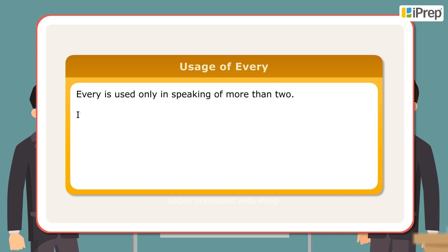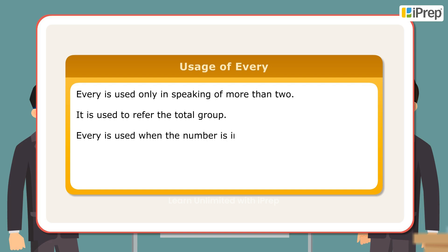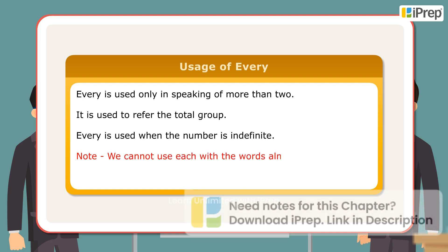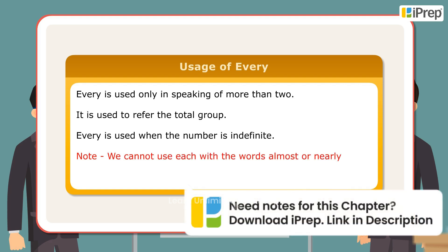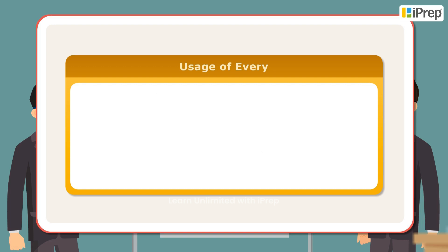Usage of 'every': Every is used only in speaking of more than two. It is used to refer to the total group. Every is used when the number is indefinite. Note: we cannot use 'each' with the words 'almost' or 'nearly' — here we use 'every.'